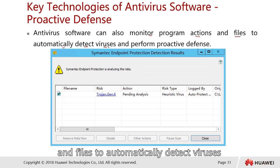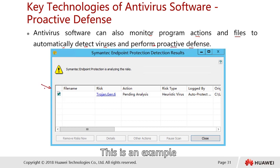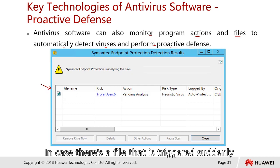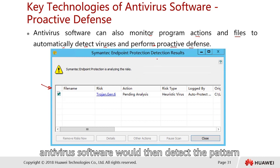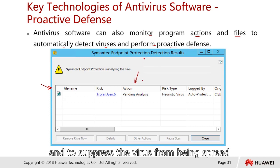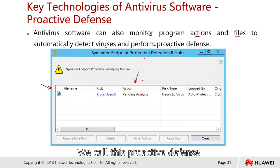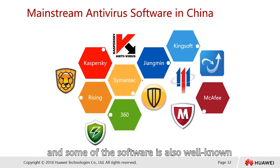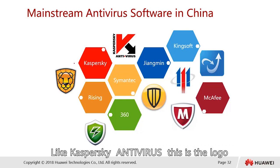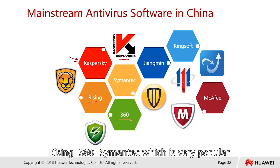Antivirus software also provides proactive defense by monitoring program actions and files to automatically detect viruses. For example, if a file is suddenly triggered and tries to attack a PC or server, the antivirus will detect the pattern and suppress it — this is called proactive defense. Some mainstream antivirus software includes Kaspersky, Rising, 360 Antivirus, and Symantec, which are well known worldwide.